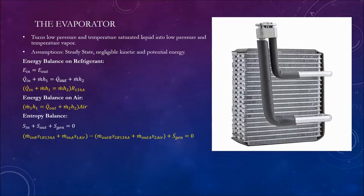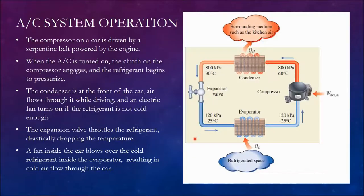This is how the AC system operates. The compressor on the car is driven by a serpentine belt powered by the engine, so the work the engine produces goes to the compressor. When the AC is turned on, the clutch on the compressor engages and the refrigerant begins to pressurize. If the clutch does not engage, the refrigerant does not pressurize.